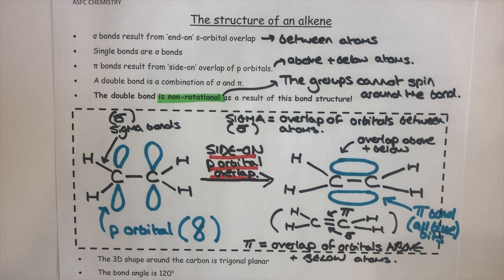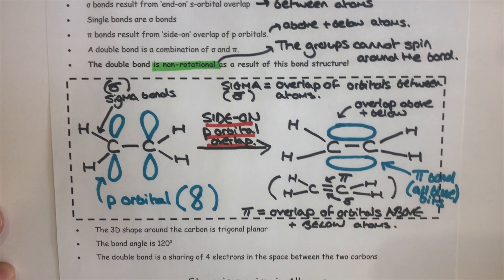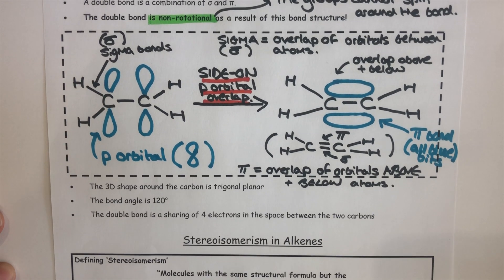The second line in a carbon-carbon double bond is called a pi bond. A pi bond is the side-on overlap of p orbitals above and below the two carbon atoms — quite different from a sigma bond. Let's have a look at a diagram to help us understand this.